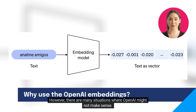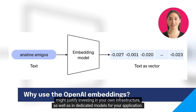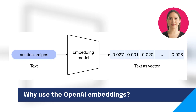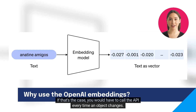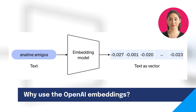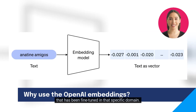However, there are many situations where OpenAI might not make sense. The first is if your application processes a very large number of documents, in which case the cost might justify investing in your own infrastructure as well as dedicated models for your application. The second reason is if the objects in your library are frequently changing, requiring frequent re-indexing — if that's the case, you would have to call the API every time an object changes. The final reason is if you are working in a specialized domain that might benefit from an embedding model that has been fine-tuned in that specific domain.